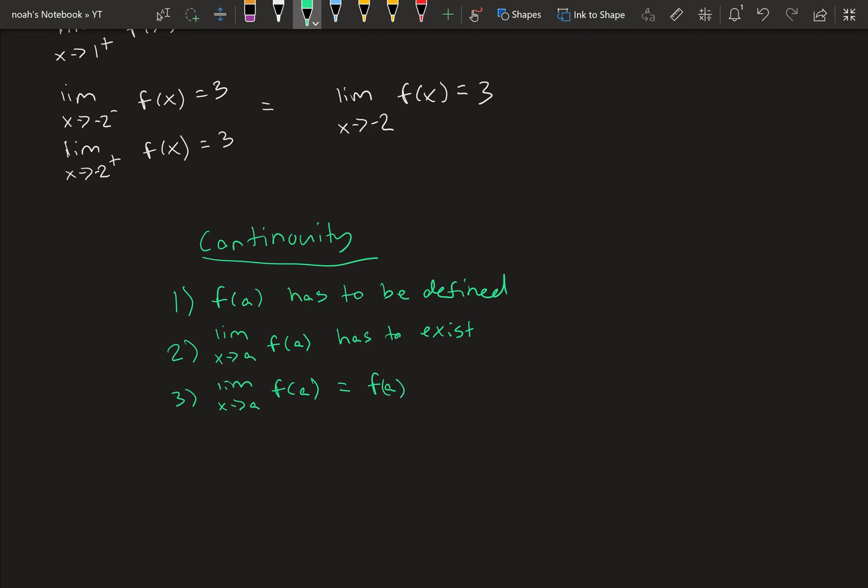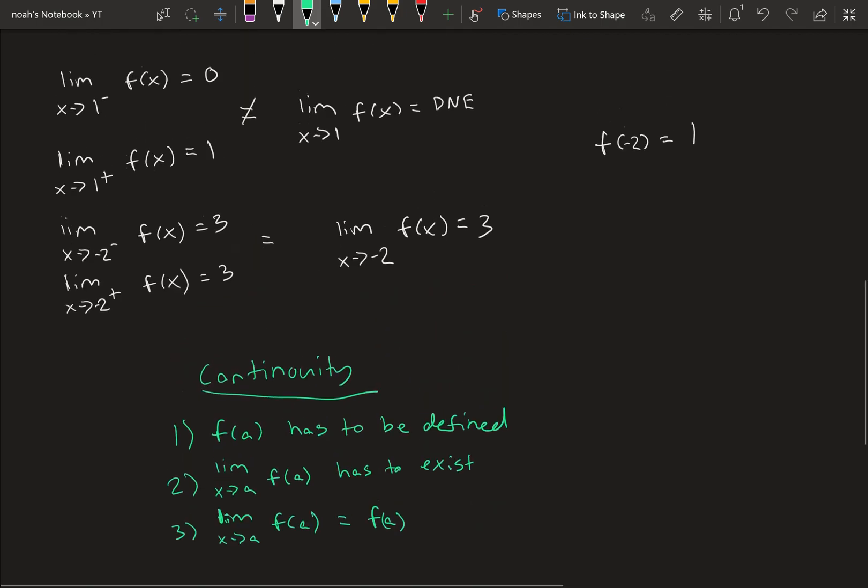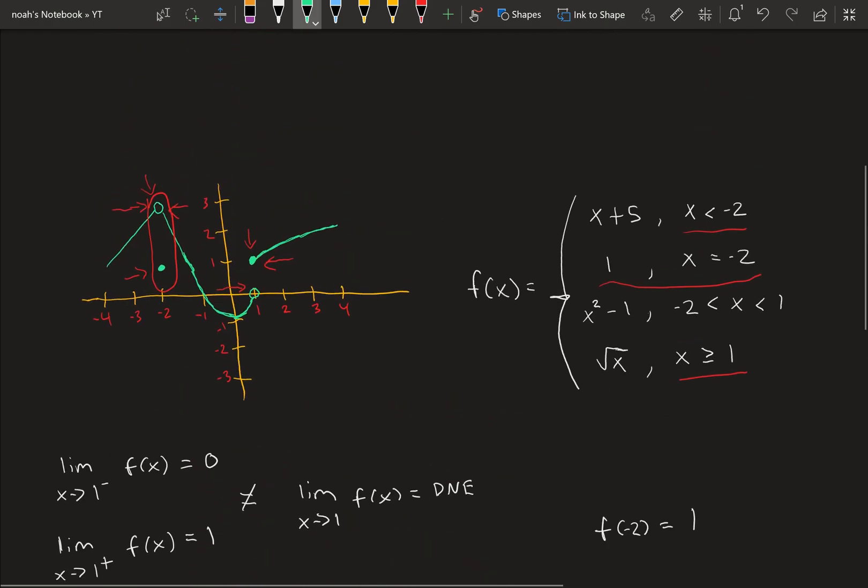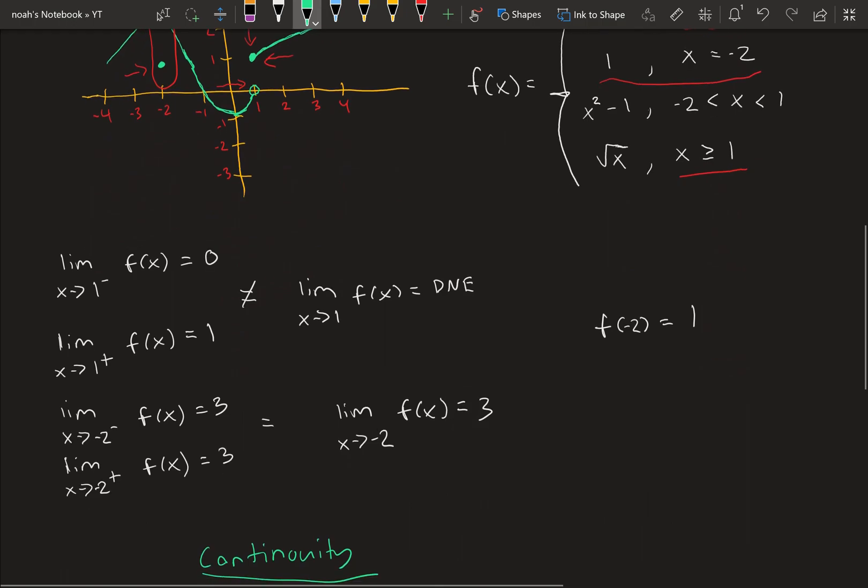And the limit x approaches a of f of a has to be equal to f of a. If all these are true, then it's continuous, which obviously f right here, f minus 2 isn't continuous because the limit does not equal the value at the point.